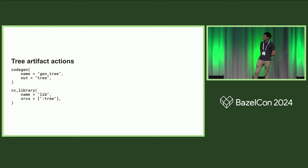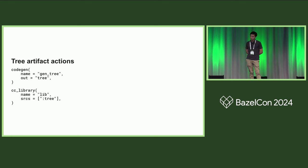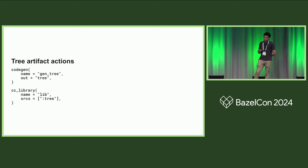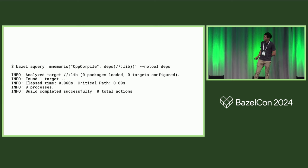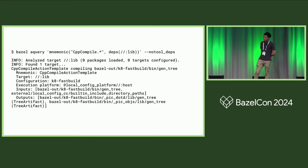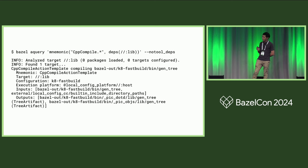What about tree artifacts? Consider an example where you have a GenRule target that generates a tree artifact, and then you feed that into a CC library. If you try to run a Bazel aquery on this CC library to find all the C++ compile actions, you will get nothing. This is because at the analysis phase, Bazel cannot know about the tree artifact content in order to create any C++ compile actions for it. Instead, it creates a C++ compile action template, and then later in the execution phase, it uses that template to create the actual C++ compile actions.